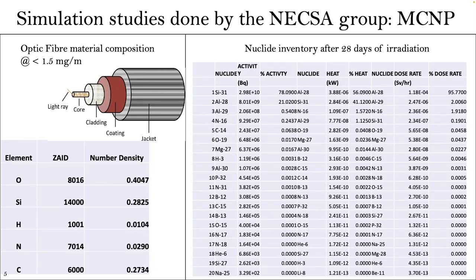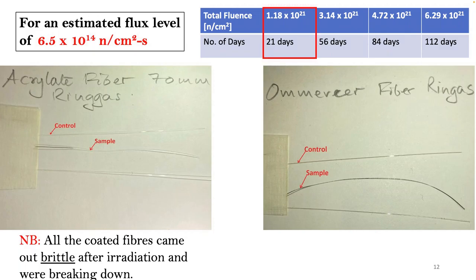Showing here the simulation studies done on the fibers, using MCNP — this work was done at NEXA. They looked at the composition of the fiber and also the nuclide inventory after irradiating these fibers for 28 days. What we found, which is comforting, is that we don't induce nuclides which are potentially hostile, potentially dangerous, or could cause long-term instabilities within the reactor. It was a good test and gave us a thumbs up in that regard.